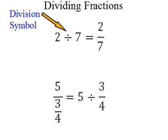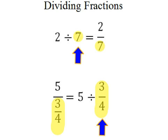In the first example, we start with the division symbol, 2 divided by 7, and we switch to fraction form 2 over 7. Now, in the bottom example, we're switching from fraction form, 5 over 3 fourths, back to division using the division symbol, 5 divided by 3 fourths. Note that the number after the division symbol becomes the denominator in fraction form. So, 7 in the top example becomes the denominator, and 3 fourths in the bottom example is the denominator.